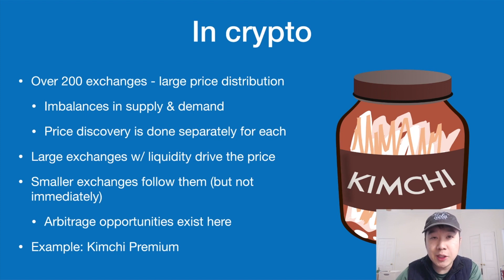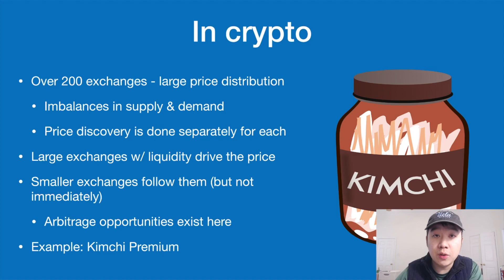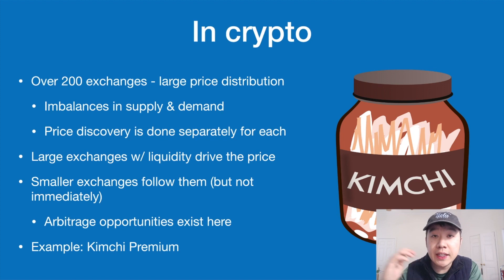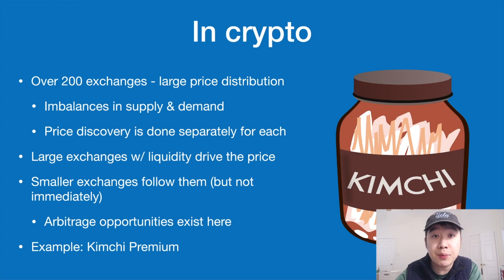A great example is the kimchi premium. Back during the bull run, South Korea had a huge premium — around 30% — on Bitcoin. So if it was selling for X dollars here, it would be 30% more in South Korea. That is called the kimchi premium and it's a great example of an arbitrage opportunity.